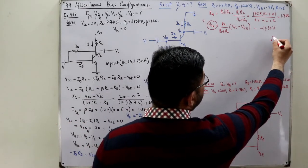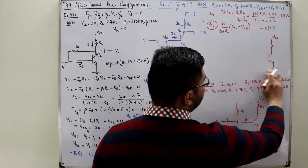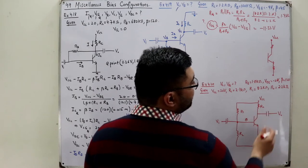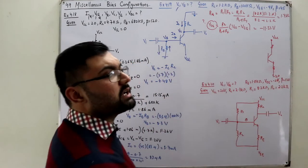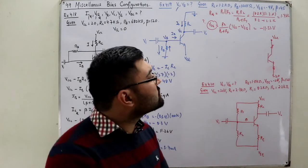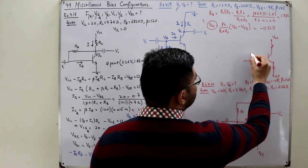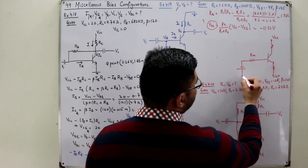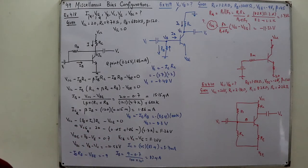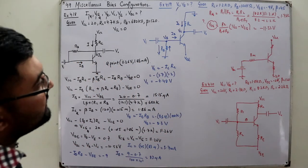Drawing the equivalent circuit: we have VCC at the top, then RC, then RE, with the negative supply of negative 20V at the bottom. The base resistance becomes R_Thevenin, with the Thevenin voltage source of 11.53V. The emitter side is grounded through RE to the negative supply of negative 20V.